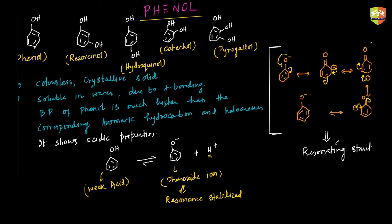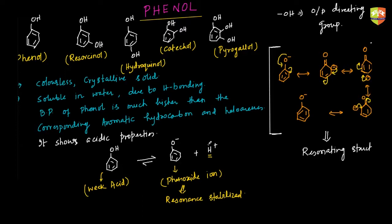In the phenoxide ion, the negative charge appears at the ortho and para positions, so the OH group present on the ring is called an ortho-para directing group. Any group present at the ortho, para, or even meta position affects the acidic behavior of phenol by affecting the stability of the phenoxide ion.